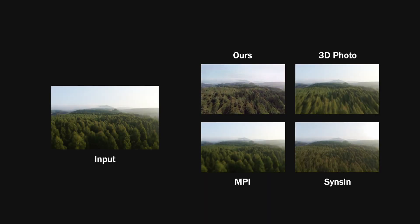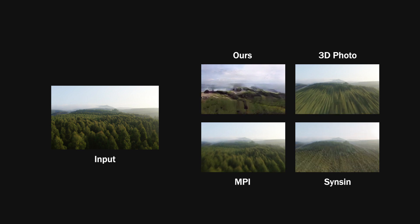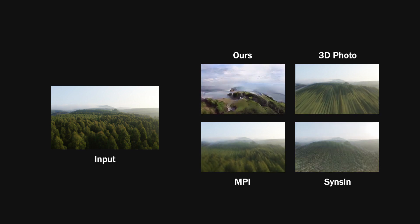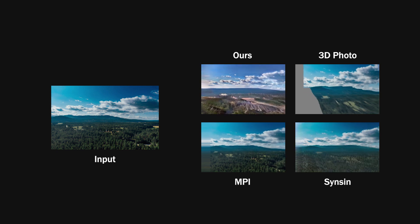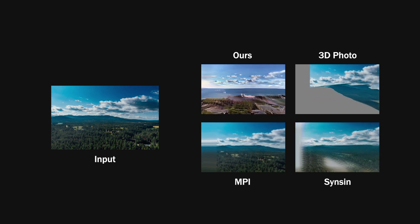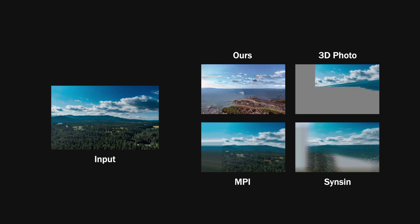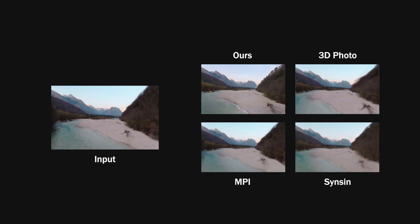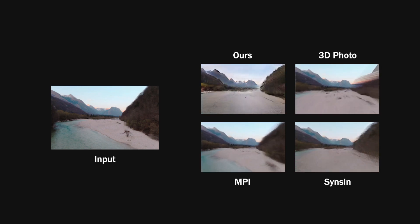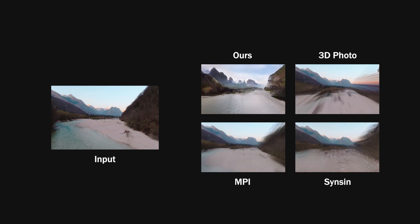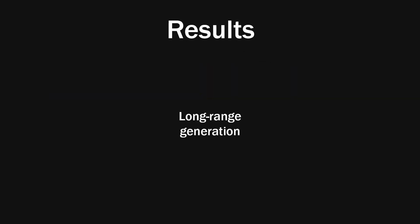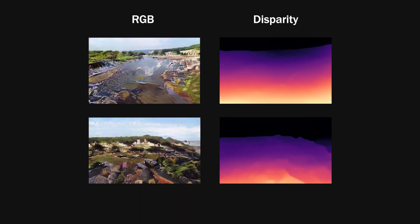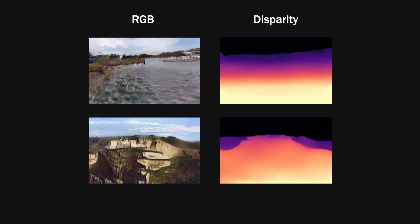Note that after 5 or 10 frames, large holes and artifacts such as stretched out content and geometric patterns appear in the baseline approaches. In contrast, our approach is able to generate new content enabling continued camera motion. The camera trajectory is automatically computed on the fly using an algorithm that avoids crashing into objects or veering towards the sky.